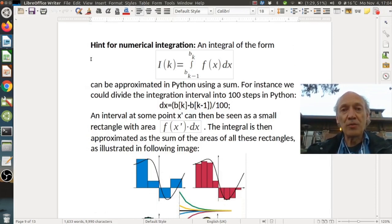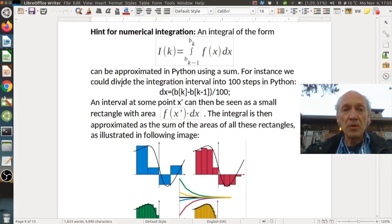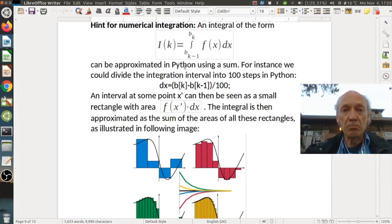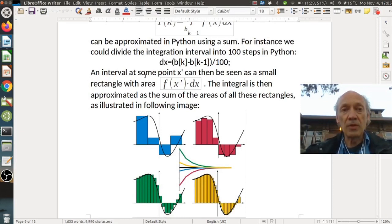For numerical integration we can actually use Python for instance. When we have this integral in one interval from b_{k-1} to b_k over f(x), then we can basically subdivide our x dimension into intervals. We could divide the integration interval into 100 steps. In Python, we have dx which would be this interval divided by 100. Then basically an interval at some point x' can be seen as a small rectangle with area f(x') times dx. For each small sub-interval we get an area of this size and then we simply add them up.